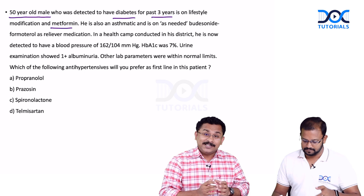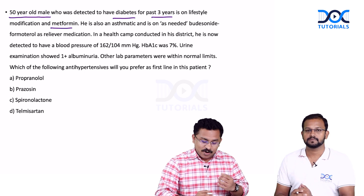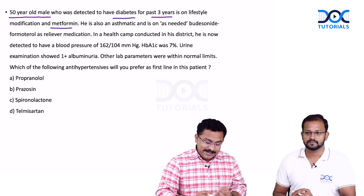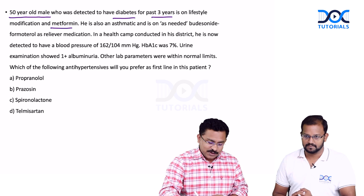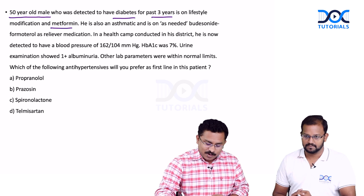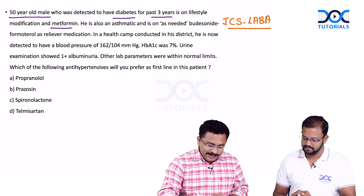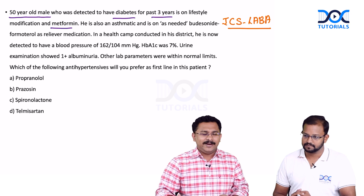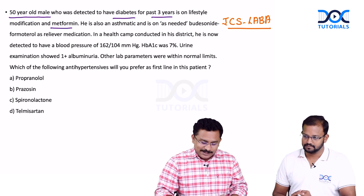This patient is also an asthmatic and he is on as-needed budesonide-formoterol, which means he is on a combination of inhaled corticosteroid and a LABA — long-acting beta agonist — as and when he develops symptoms.